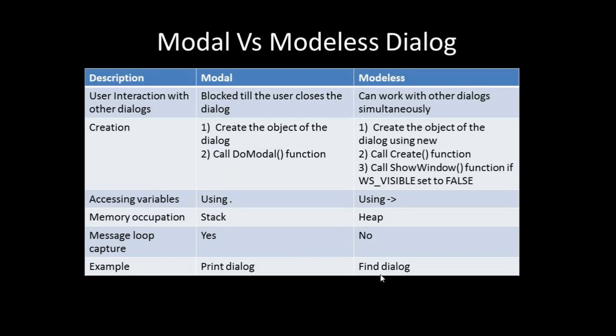Regarding memory: a modal dialog is created in stack memory, whereas a modeless dialog is created in heap memory. For message loop capture: in a modal dialog the message loops are captured; in a modeless dialog they are not. An example of a modal dialog is a Print dialog — until you click OK or Cancel you cannot go back to the document. A classic modeless example is the Find dialog, where you can search and see results highlighted in the parent window.